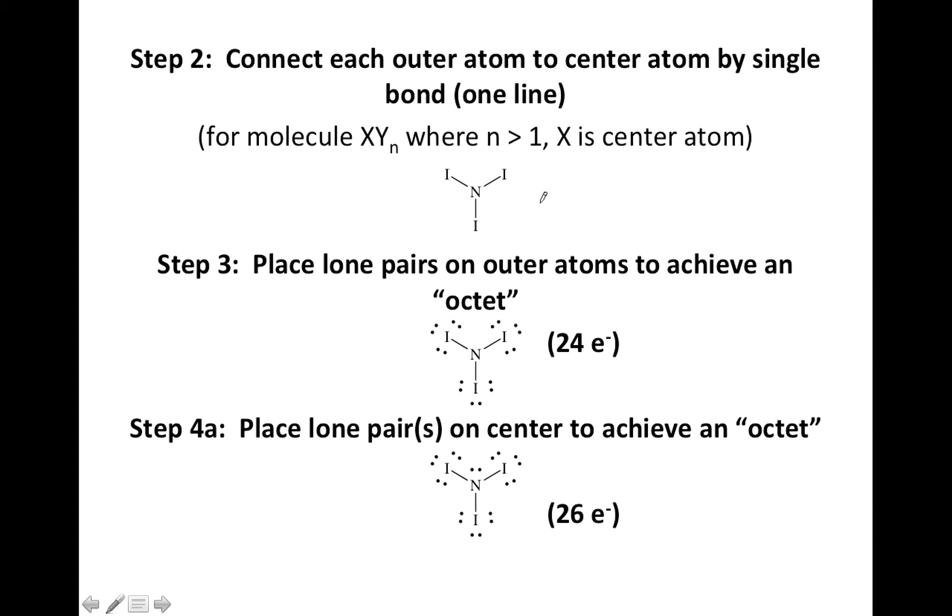Step two says to connect all the atoms by a single bond or one line between all the atoms. And this little note in parentheses just says if something has a formula that follows this format, XYn,